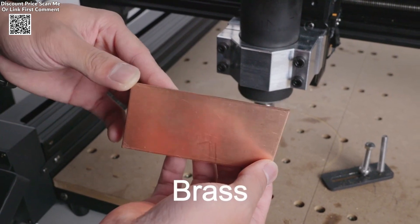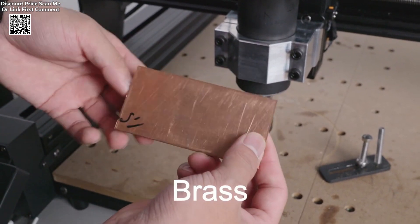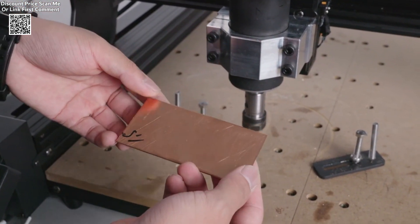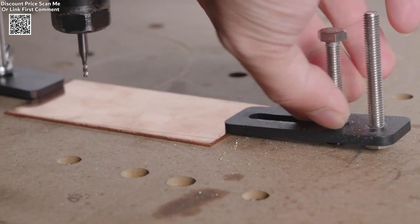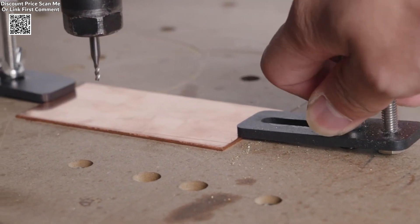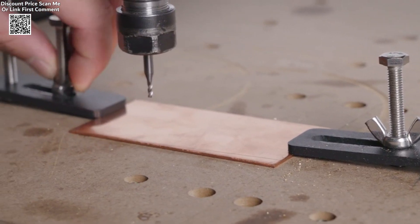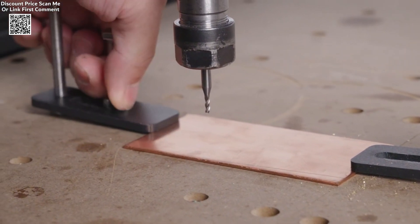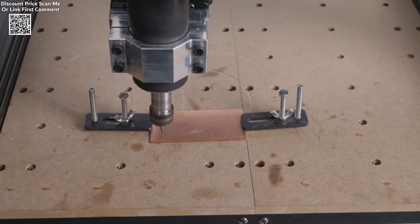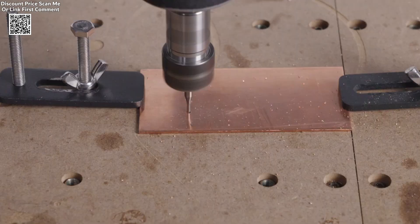The Tuaris TTC450 CNC laser engraver is a versatile and high-performance machine designed for a wide range of engraving and cutting applications. This all-aluminum CNC router machine is built to be stronger and more durable than many other models on the market, making it an excellent choice for both hobbyists and professionals.